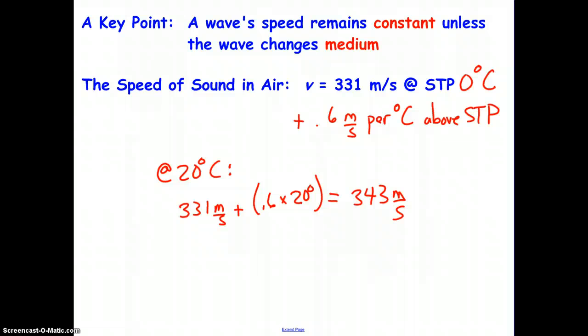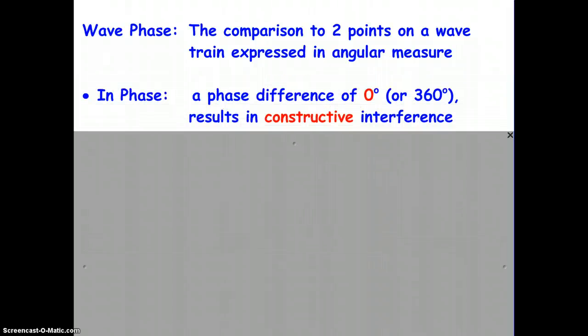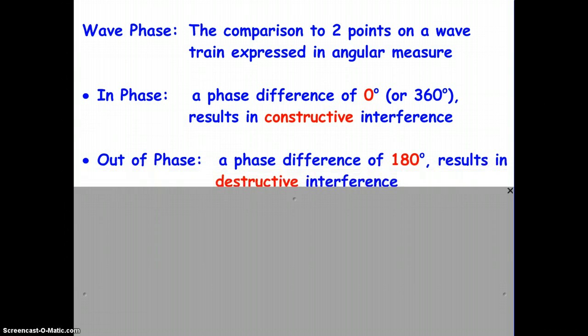One more concept before we call it a lesson here, and that concept is wave phase. Phase is the comparison of two points on a wavetrain expressed in angular measure. If we say that two waves are in phase, that means they have a phase difference of 0 degrees, or 360, which results in constructive interference. If we say that two waves are out of phase in physics, that means they have a phase difference of 180 degrees, and results in destructive interference.